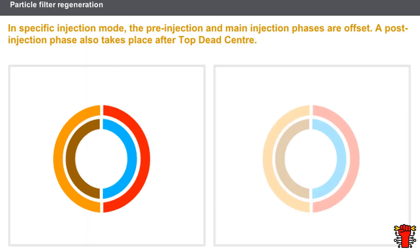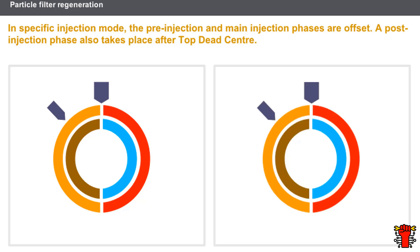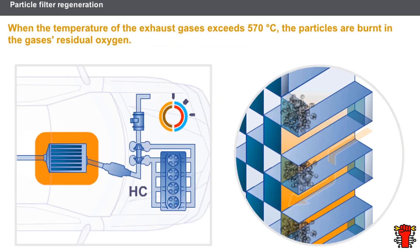During normal operation, the fuel injection takes place in two stages: pre-injection of a small amount of fuel before top dead center, and main injection at top dead center. In specific injection mode, the pre-injection and main injection phases are offset. A post-injection phase also takes place after top dead center. Also, the computer continues to inject fuel during the deceleration phases. The delayed injection of diesel fuel produces large amounts of unburnt hydrocarbons.